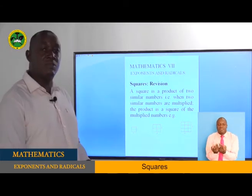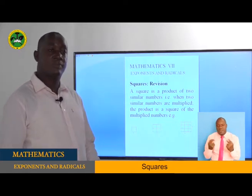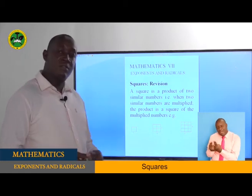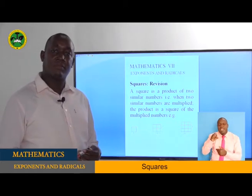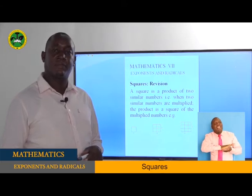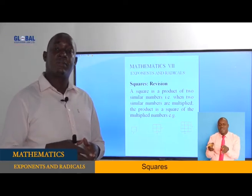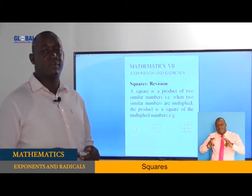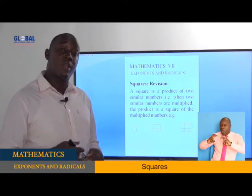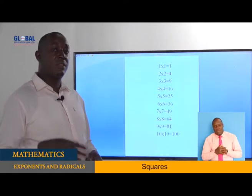Let's have a look at the figures we have: 1 by 1, 2 by 2, 3 by 3 — at least these numbers are of the same. Where do we find these squares? How are they important to us? Squares can help us to find the area of plots, the area of rooms. It is very, very important for us. You have a square plot, a square room, an area that is squared. We can use squares to find the area of various areas that we live in.